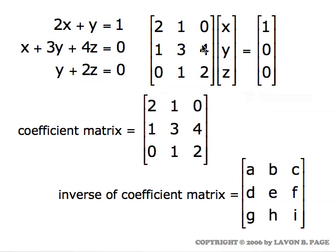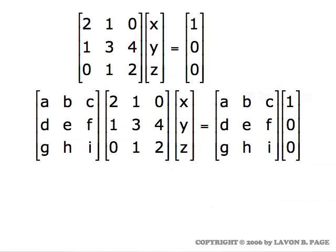In this matrix equation we're looking at the coefficient matrix for the system, and let's temporarily use placeholder letters to represent the entries in the inverse matrix for that coefficient matrix. So here's the coefficient matrix and we'll use these letters to represent the numbers that would be in its inverse.